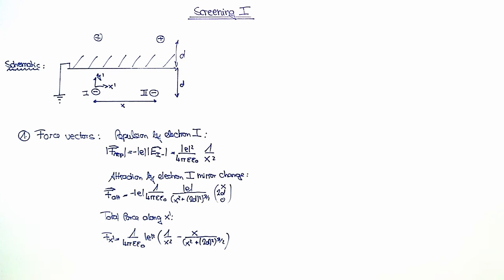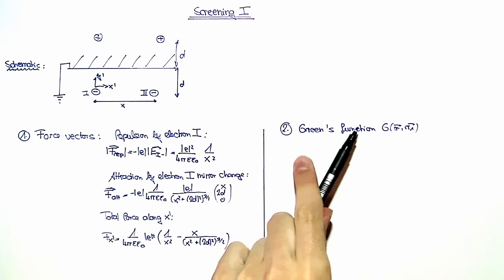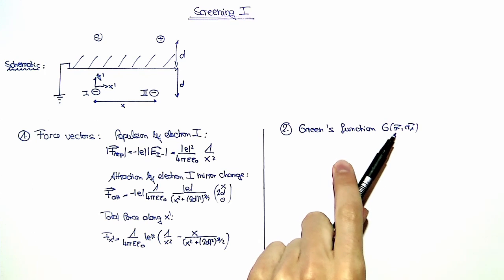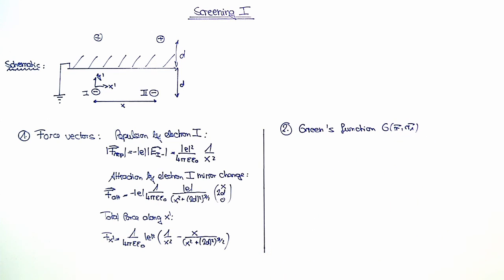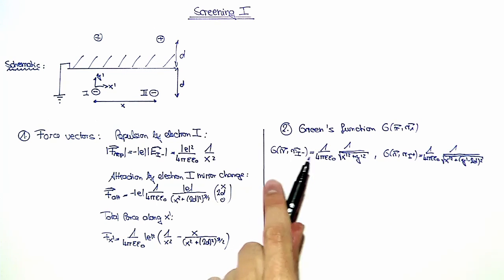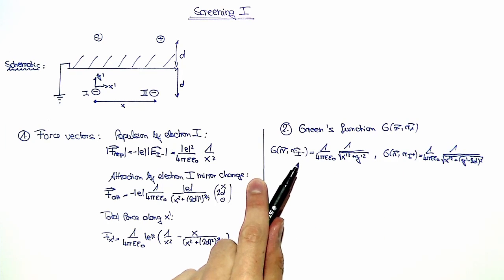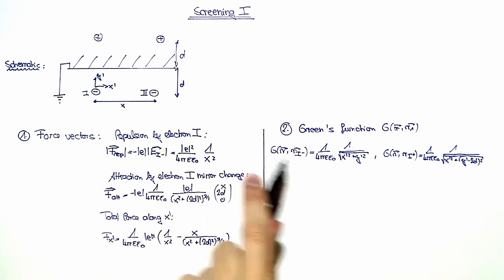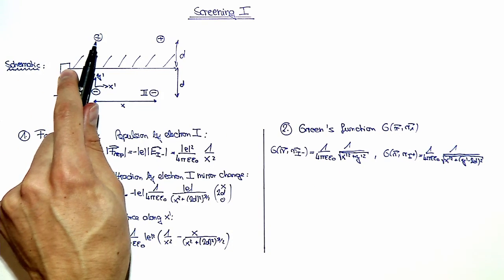This was the first method to solve the problem. For the second method, we are going to consider Green's functions. Green's function g of r and r1 describes the electrostatic potential at r that is created by a unity point charge placed at position r1. In our case, the potential due to electron 1 and its mirror charge have to be considered, and we obtain the following two Green's functions — one for a unity charge at the position of electron 1, and one at the position of the mirror charge of electron 1.